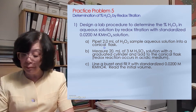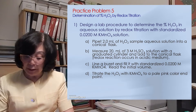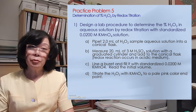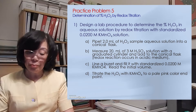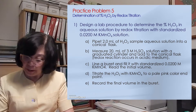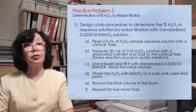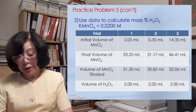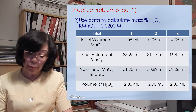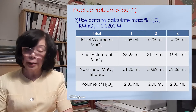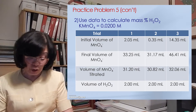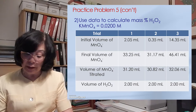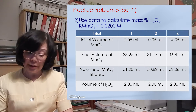I record the initial volume. One additional drop of permanganate ion will then yield a pink color in the solution when Mn²⁺ ion is produced. I record the final volume from the burette, then repeat this for two more trials. Here is the data chart — I have done it three times. I record the initial volume and final volume of permanganate in the burette, and by subtraction I get the volume of permanganate titrated, which is about 31, 30, and 32 milliliters. I used 2 milliliters of hydrogen peroxide exactly when I pipetted it into the flask.